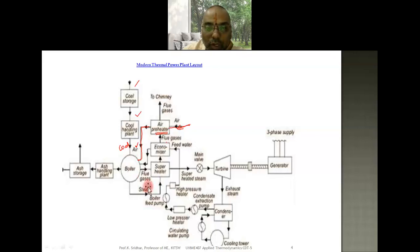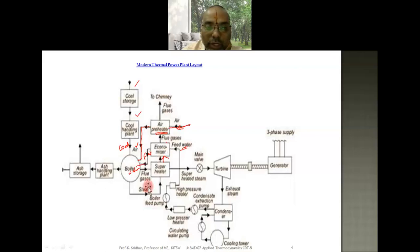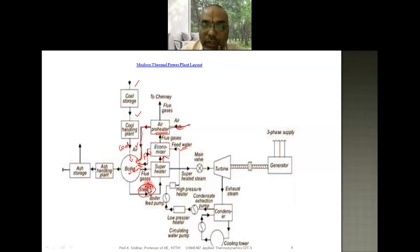Water enters the system through the economizer, where the feed water is preheated by the flue gases transferring heat to it, so somewhat heated feed water enters the boiler. Fuel and preheated air are also supplied. The heat input converts the water into steam at the boiler exit, which then goes to the superheater. The purpose of the superheater is to further heat the steam coming from the boiler, producing superheated steam that goes to the turbine.